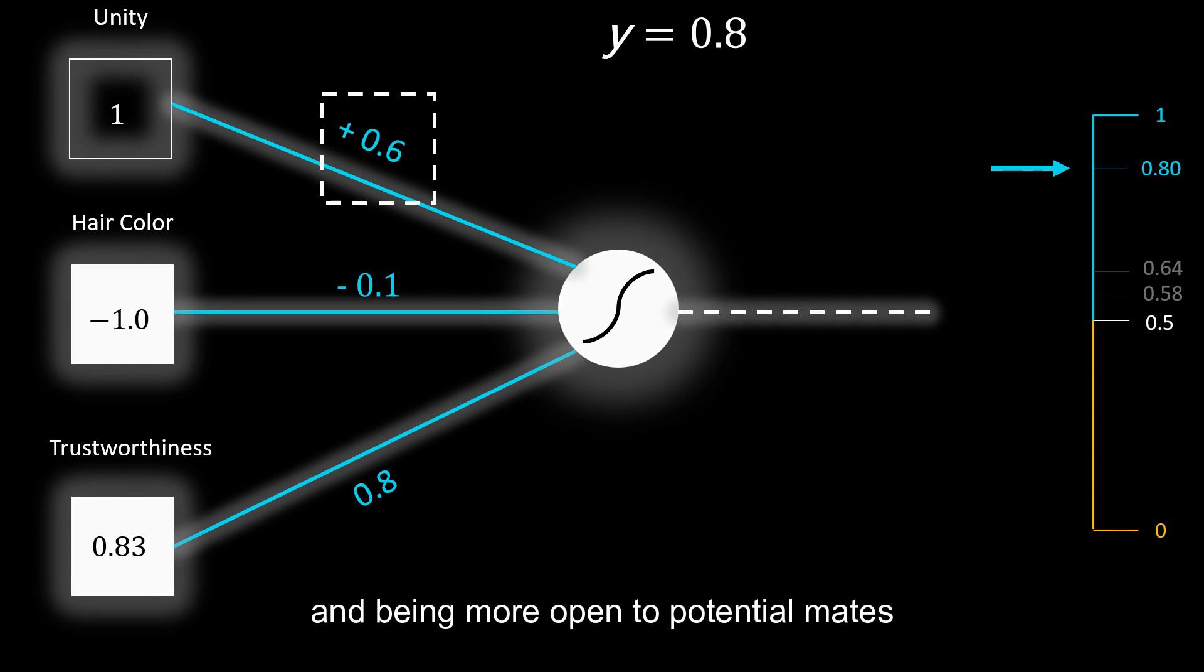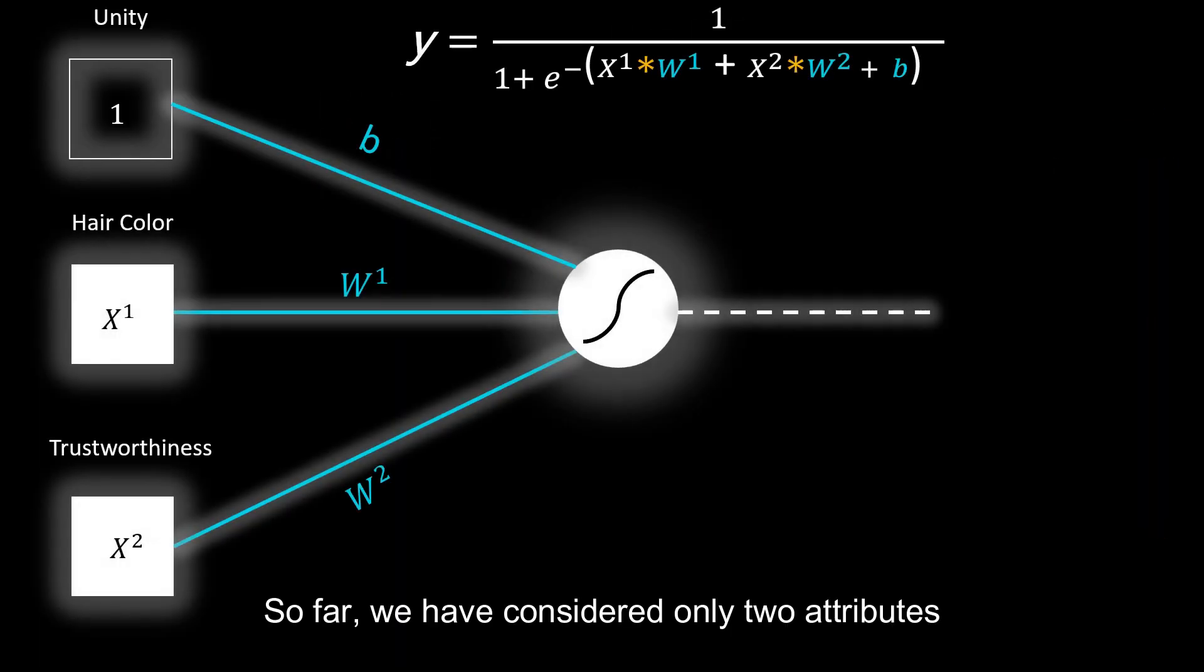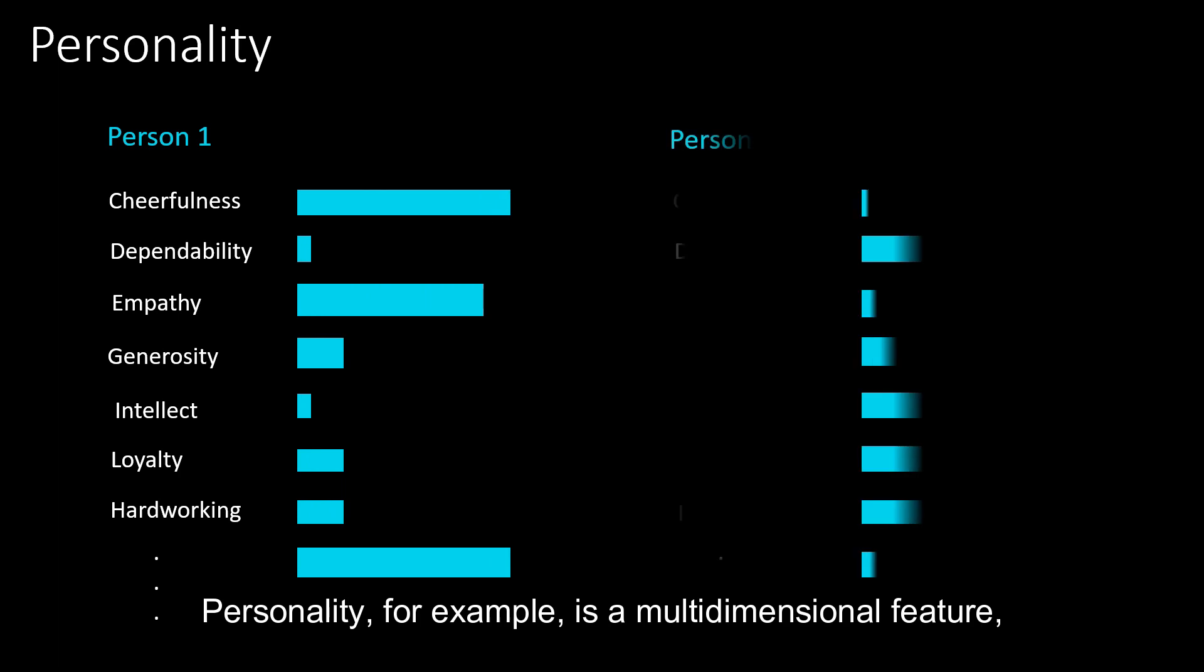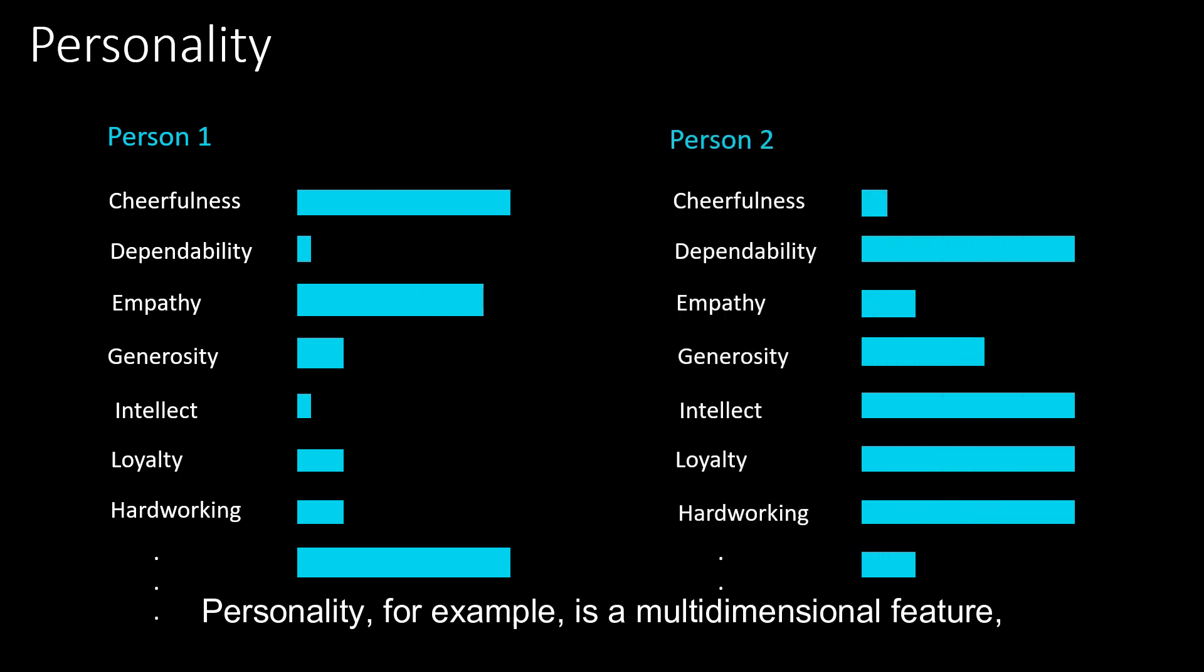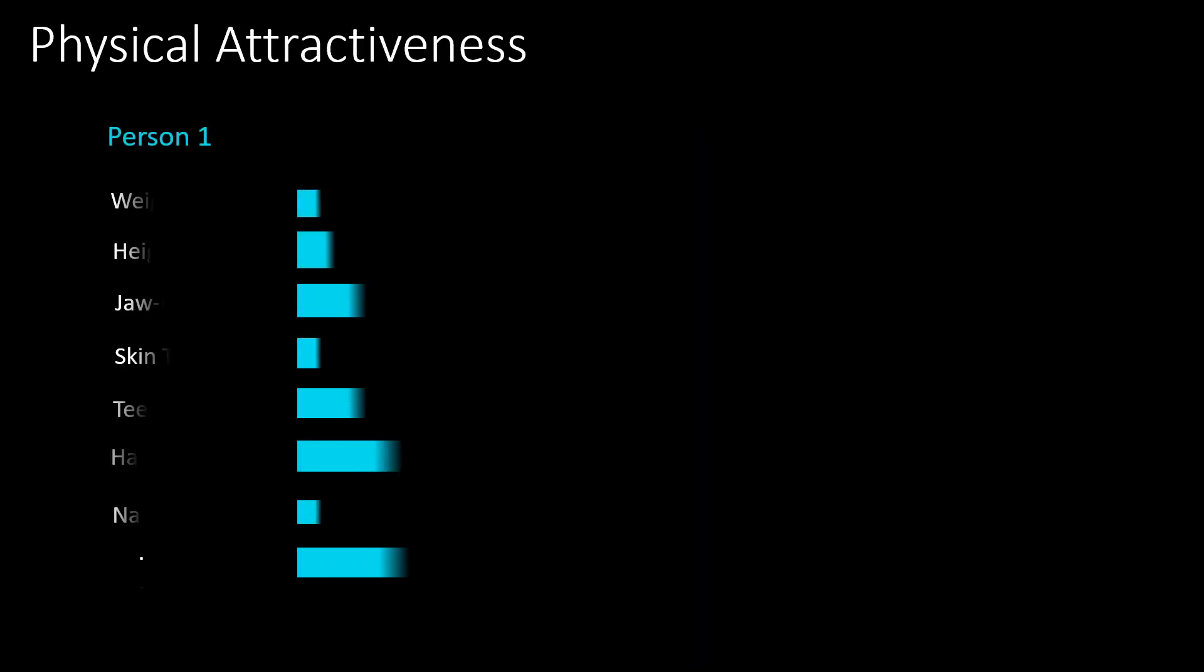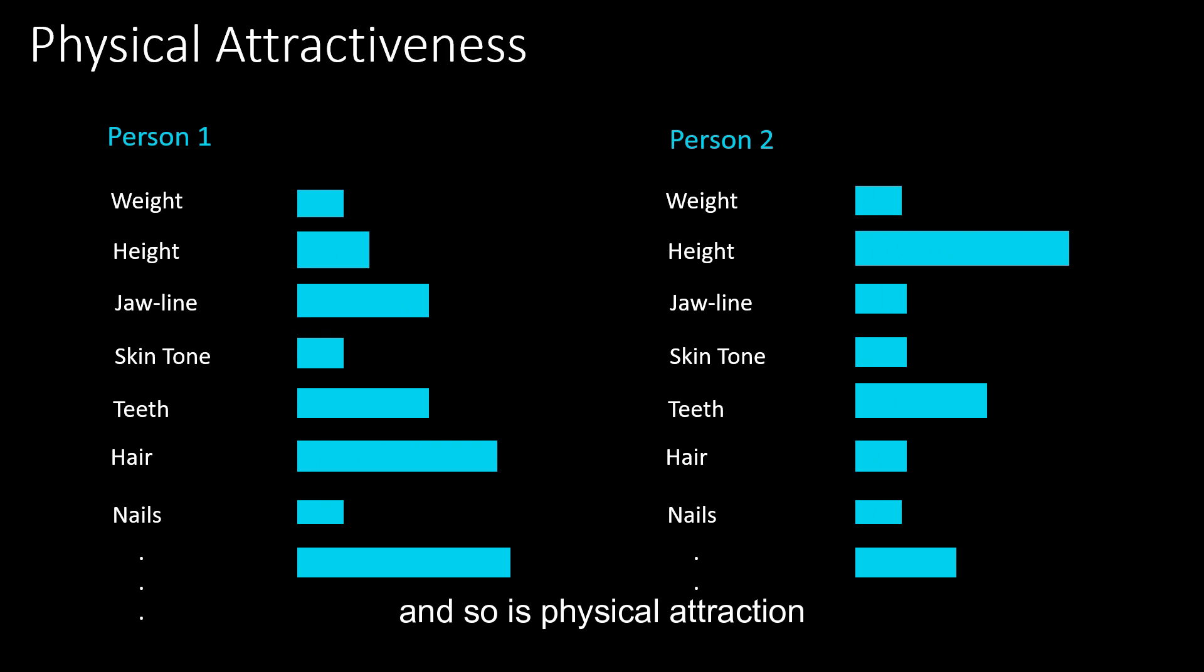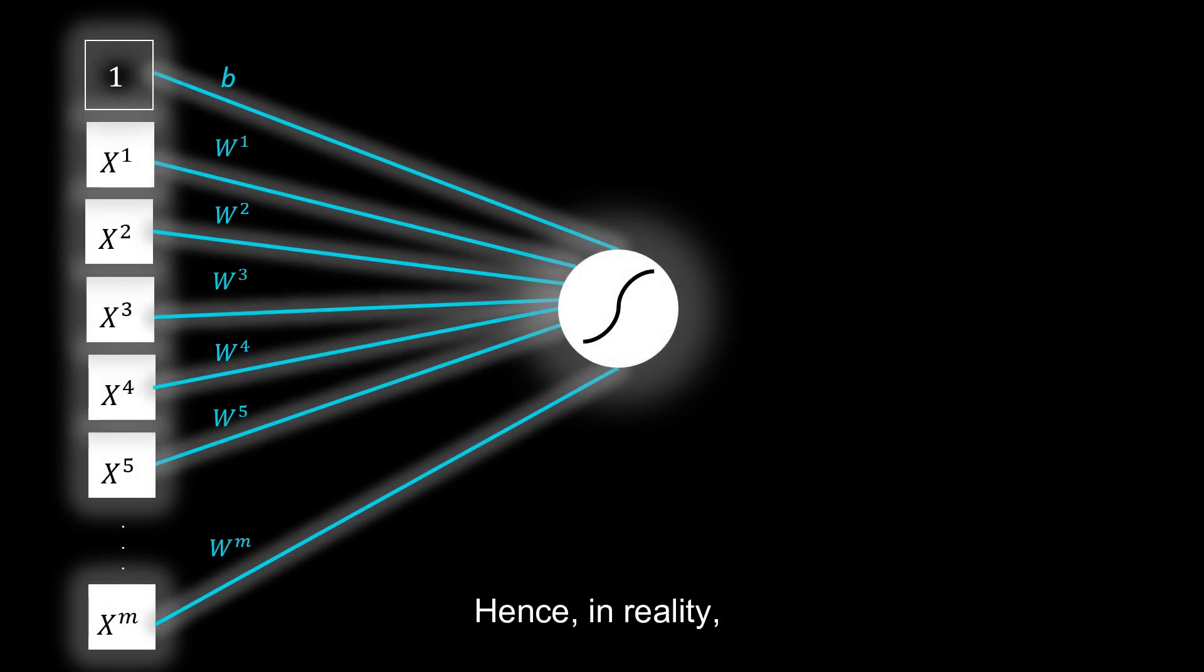So far we have considered only two attributes, which in a real life scenario are clearly not enough. Personality, for instance, is a multi-dimensional feature, and so is physical attraction. Hence in reality, we may require hundreds of attributes to create a reasonably accurate prediction model.